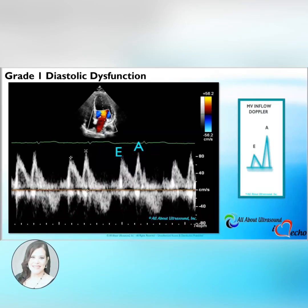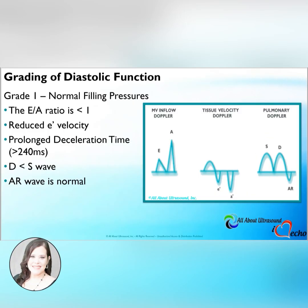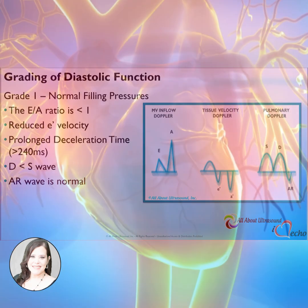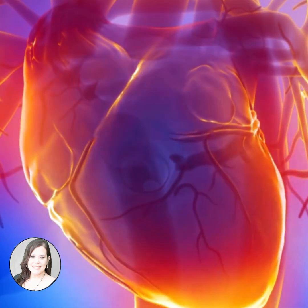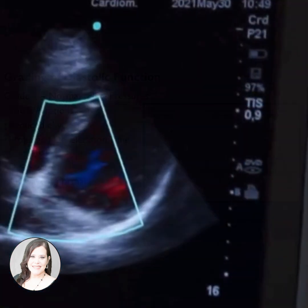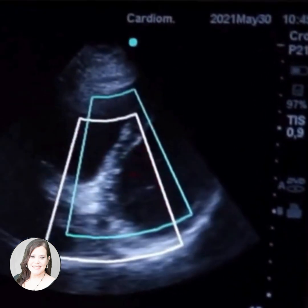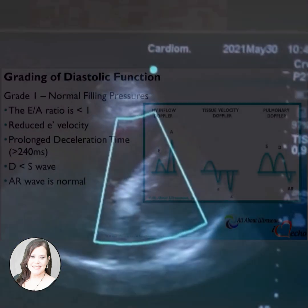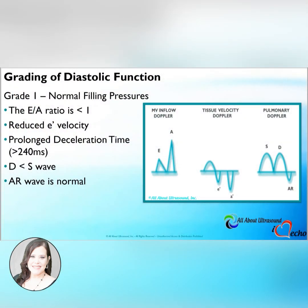Patients that don't have a normal ejection fraction and fall into that category of grade one diastolic dysfunction will most of the time still have normal filling pressures. It's possible they could be slightly abnormal, but they're not significantly abnormal. So the most change that you'll see is the change to the mitral inflow pattern as well as the tissue velocity Doppler. The pulmonary Doppler doesn't really change much for grade one diastolic dysfunction.